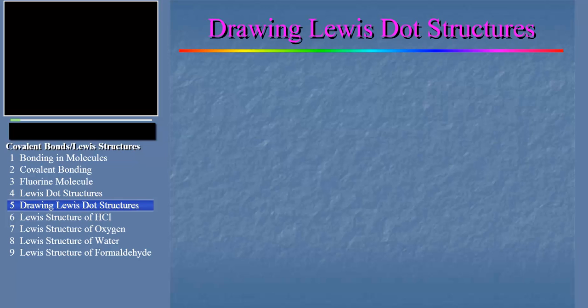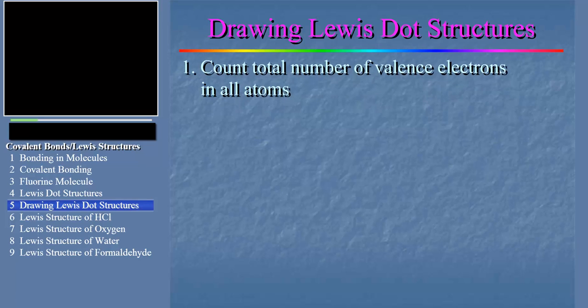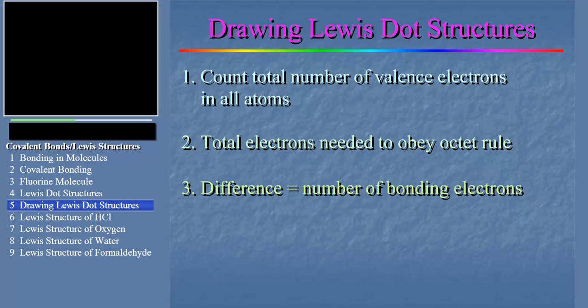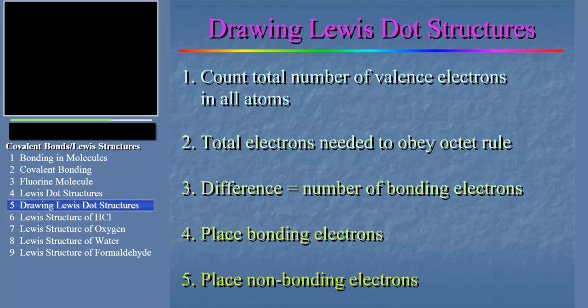It turns out that there is a simple procedure for drawing Lewis dot structures which works almost every time. Here are the five steps in order. First, we count the total number of valence electrons in all the atoms in the molecule. Second, we count the total number of electrons needed by all atoms to obey the octet rule. Third, we take the difference between these two numbers, and this gives us the number of bonding electrons in the molecule. That is, the number of electrons that will appear in bonds. Fourth, we place the bonding electrons between the atoms. Fifth, the remaining electrons are called non-bonding electrons. We assign these to the atoms so that each can obey the octet rule. Now this is all probably as clear as mud at this point. But as we do a series of examples in the following slides, hopefully all will become clear to you.